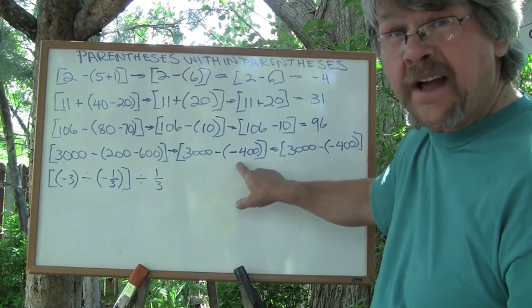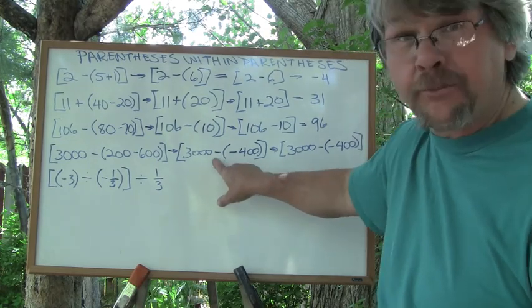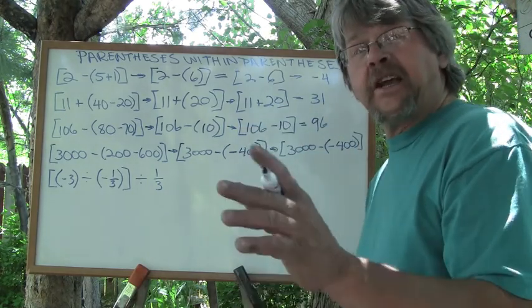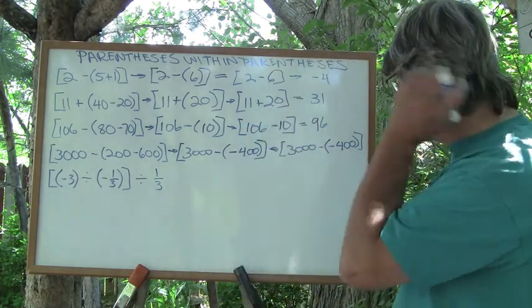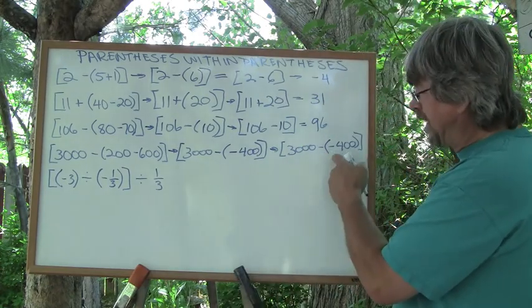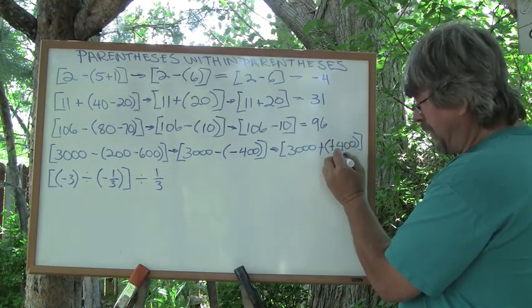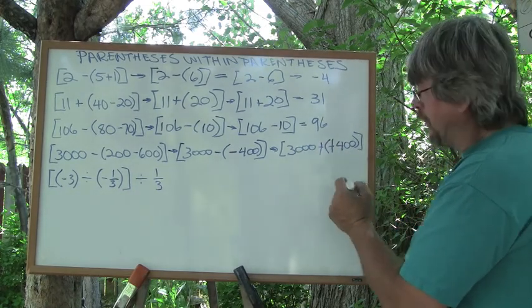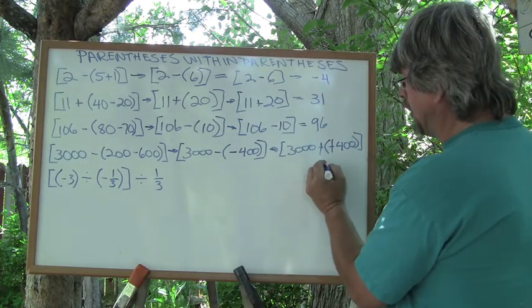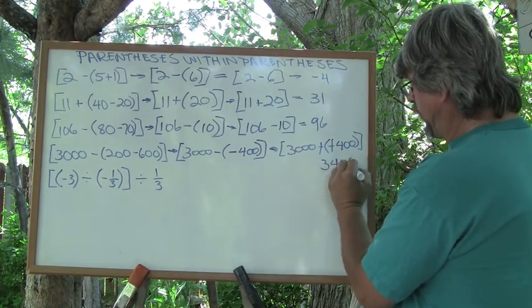That tells you that's a negative 400 and it's being subtracted. I'm doing this on purpose to give you the sight, to get you used to seeing this. Now we have our double negative which we can negate the negative, so this becomes 3,000 plus 400, which is 3,400.